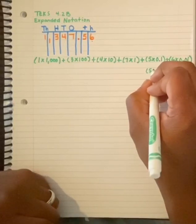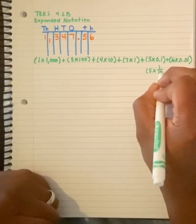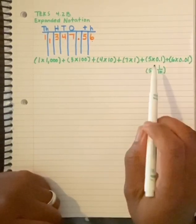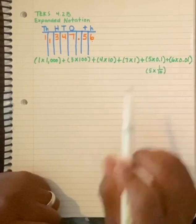So what would one tenth look like? Five groups of one over ten. These are the same. These are the decimal form. This is the fraction form.